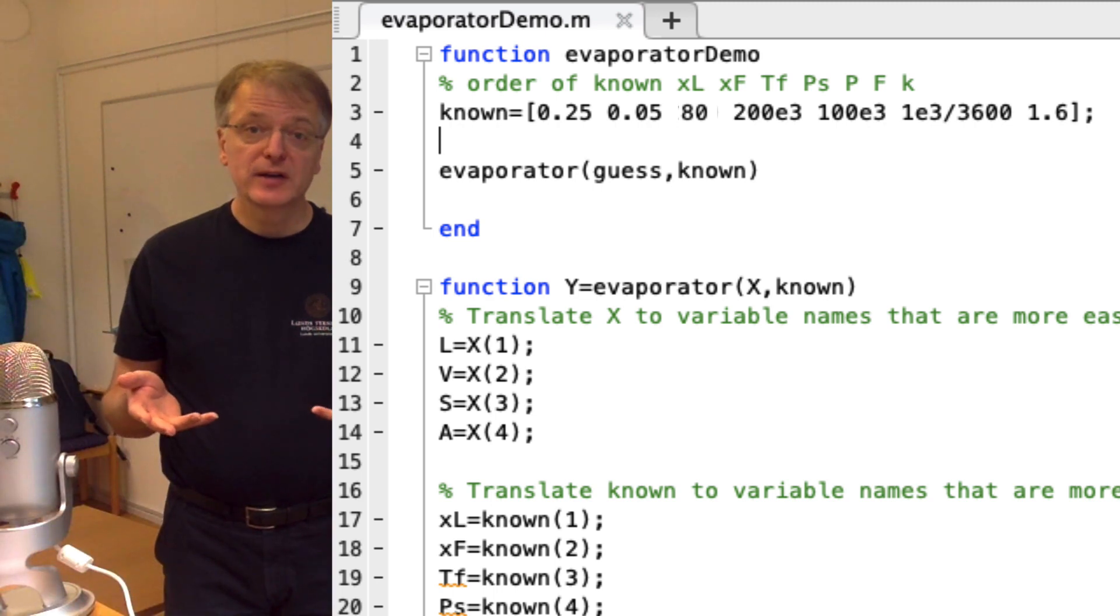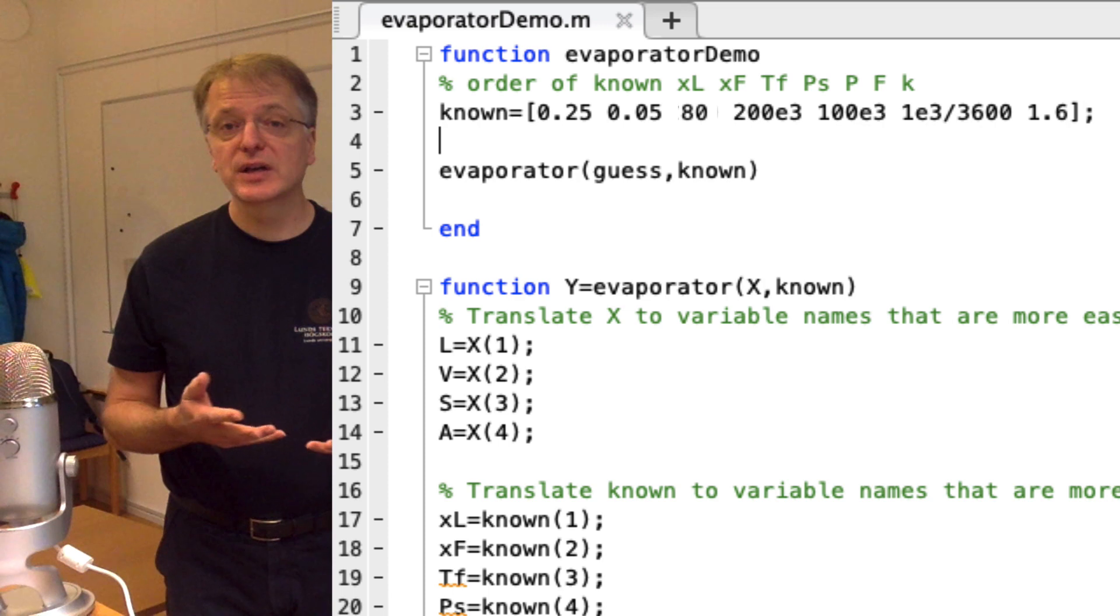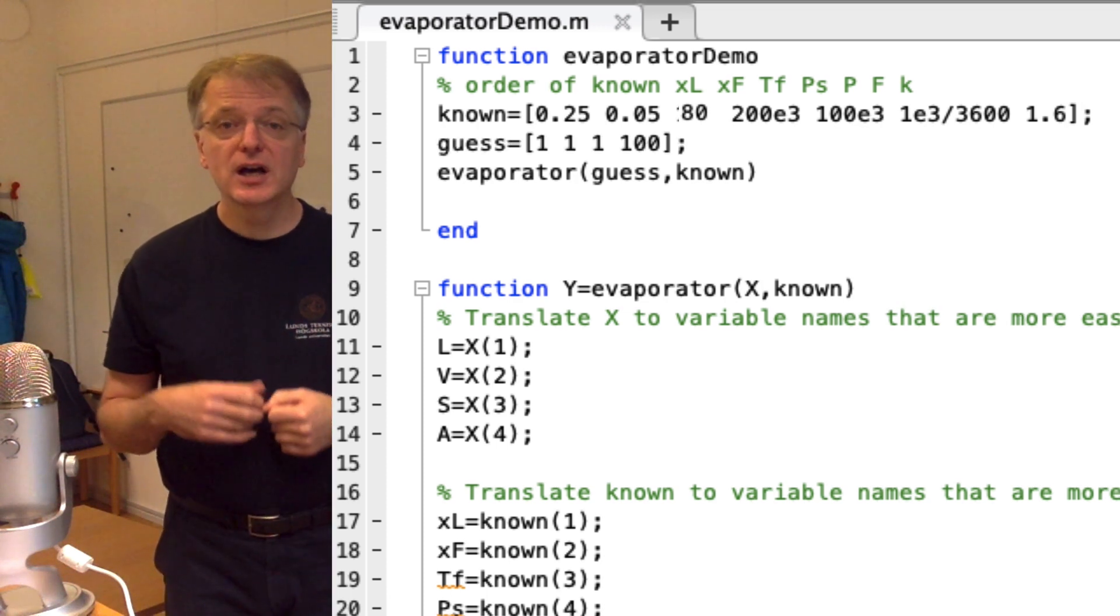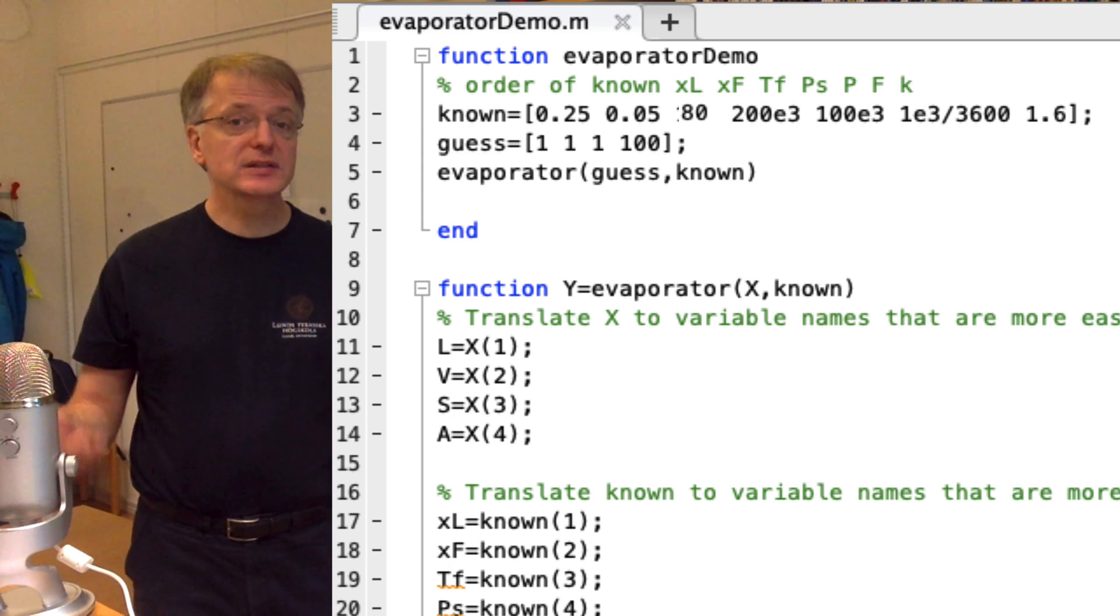We also need to provide a guess of the solution. Let us use 1 kg per second as our guess for all fluxes and 100 square meters as our guess for the area. So what is left to do?